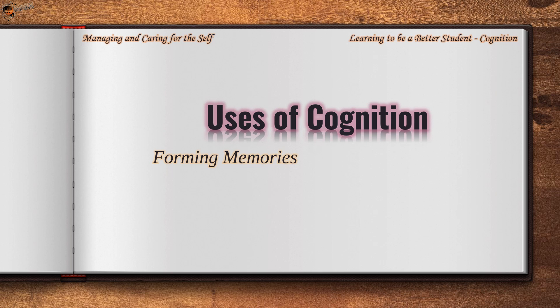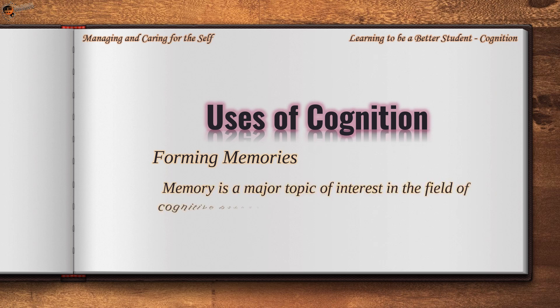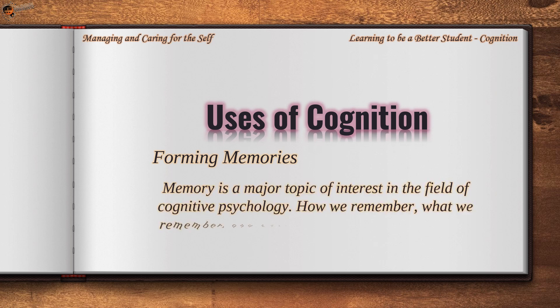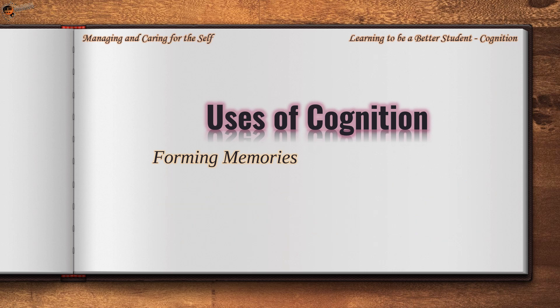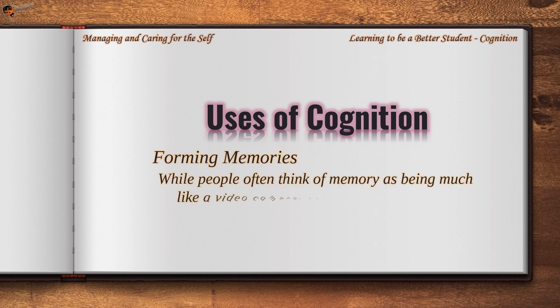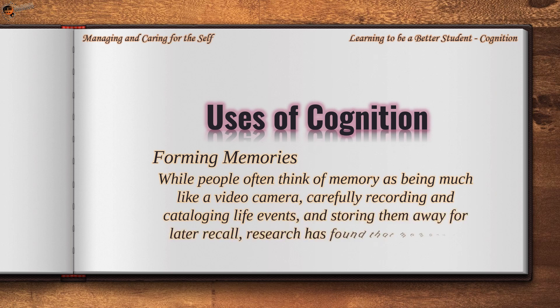Memory is a major topic of interest in the field of cognitive psychology. How we remember, what we remember, and what we forget reveal a great deal about how the cognitive processes operate. While people often think of memory as being much like a video camera, carefully recording and cataloging life events and storing them away for later recall, research has found that memory is much more complex.